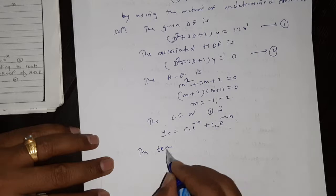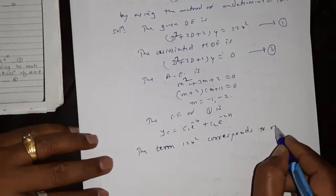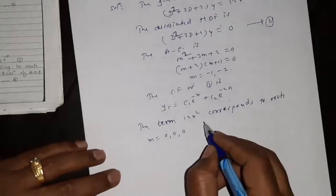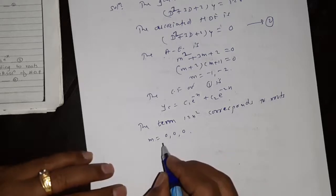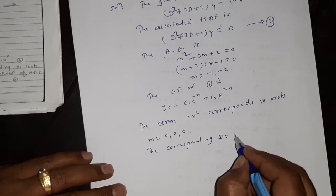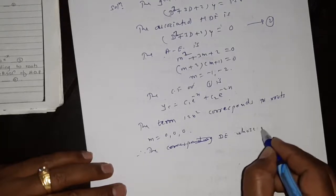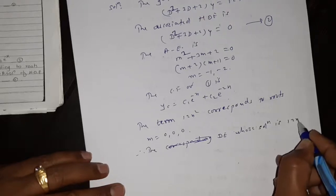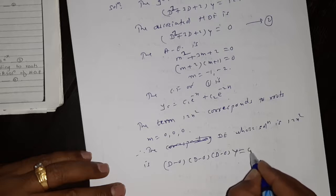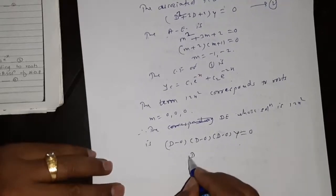The term 12x² corresponds to roots m equal to 0, 0, 0. The corresponding differential equation whose solution is 12x² is (D−0)(D−0)(D−0)y equal to 0, that is 12x² is the solution of d³y equal to 0. This is equation number 3 and equation number 4.